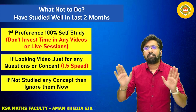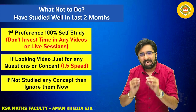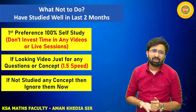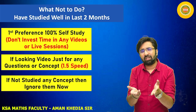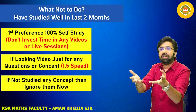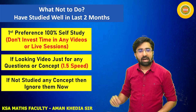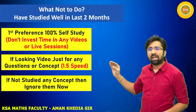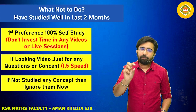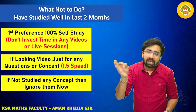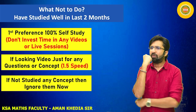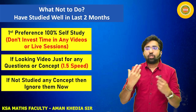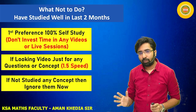What you should NOT do: don't invest time in any live sessions or videos. You cannot match a 200-hour session in just 10–20 hours — it's not possible. But if you invest your own 10 hours in self-study, you can 100% achieve your targets. If you do watch any of my videos or question discussions, watch them at 1.5x or 1.25x speed to save time. Always try the question yourself first, then check if I used a shortcut method.